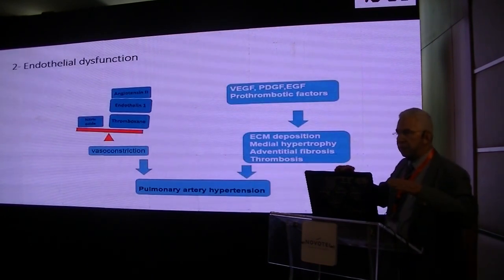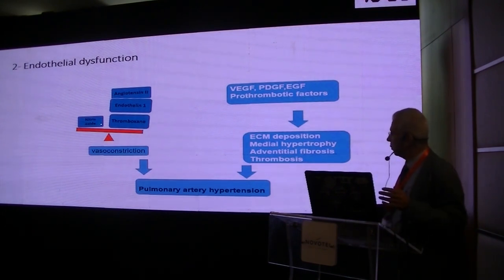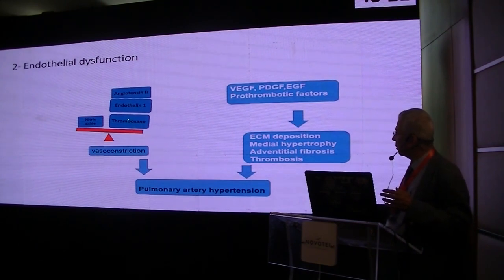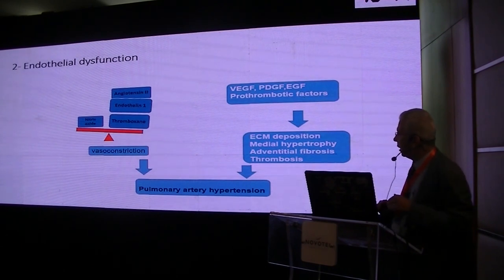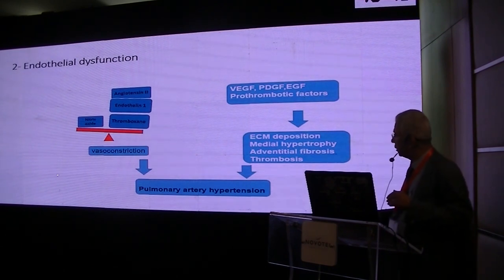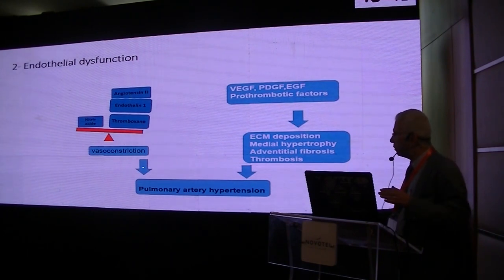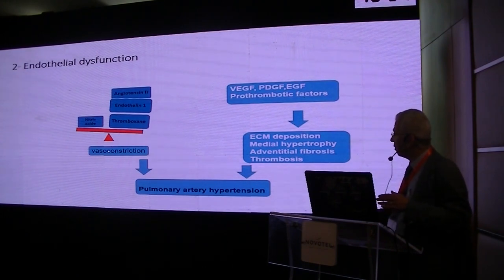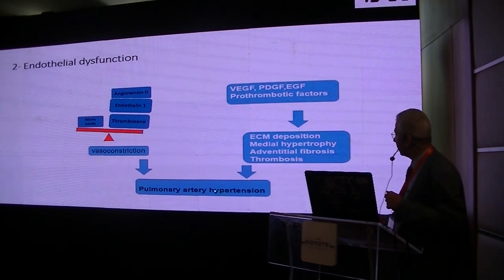There is a balance between vasoconstrictor and vasodilator material. The most important vasodilator is nitric oxide, together with vasoconstrictors like angiotensin 2, endothelin 1, or thromboxane. The balance between these determines whether improvement or induction of pulmonary hypertension occurs. If vasoconstrictor material dominates, then vasoconstriction will happen and the end result is pulmonary arterial hypertension.